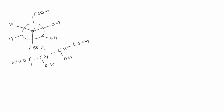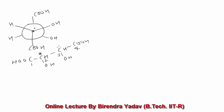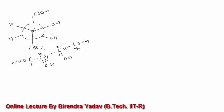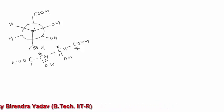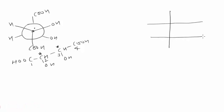Now if I number them 1, 2, 3, 4 — the second carbon is chiral and the third carbon is chiral. So with the help of bond structures, we can easily say there are two chiral carbon atoms. So the Fischer projection will look like this, and with two chiral carbon atoms, the Fischer projection can be written like this. Now we have to identify what the different groups are.